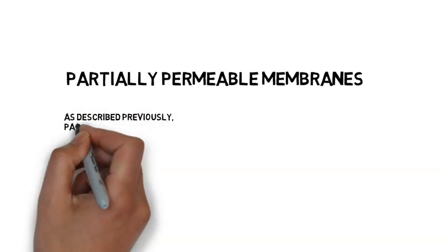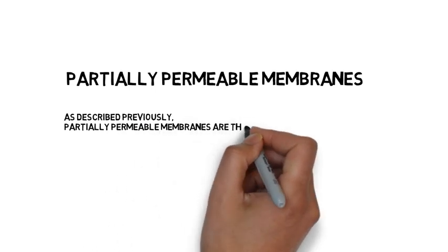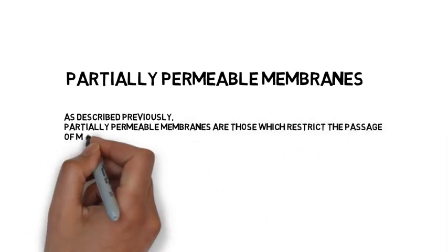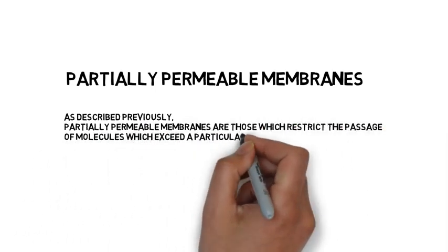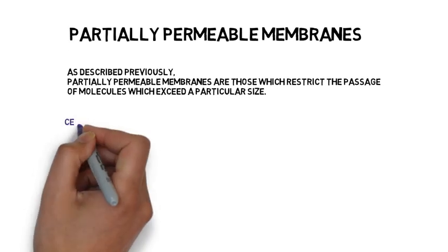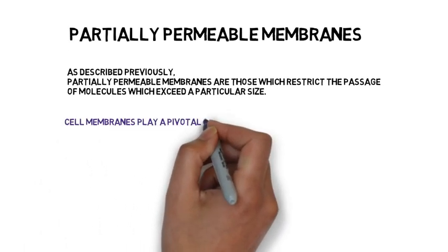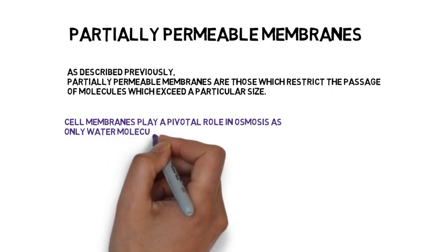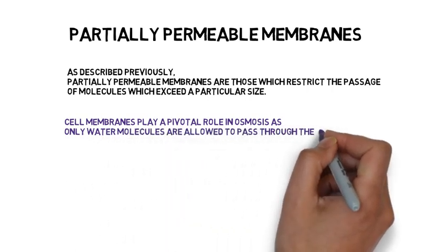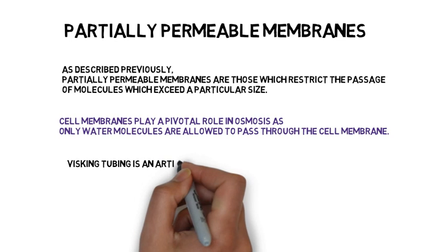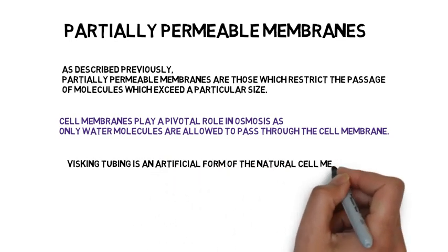Partially permeable membranes. As described previously, partially permeable membranes are those which restrict the passage of molecules which exceed a particular size. Cell membranes play a pivotal role in osmosis as only water molecules are allowed to pass through the cell membrane. Visking tubing is an artificial form of the natural cell membrane.